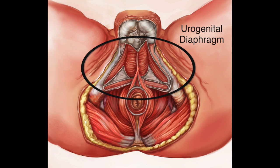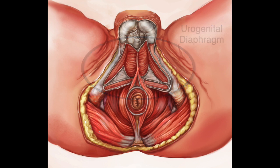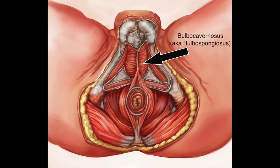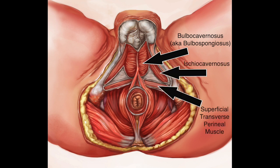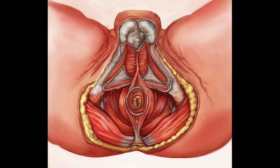The muscles that we are looking at include the bulbocavernosus, the ischiocavernosus, and the transverse perineum. All of these really assist in orgasm and sexual health, and also bladder control.